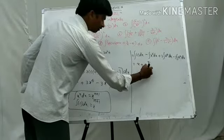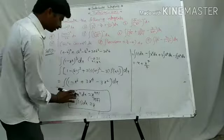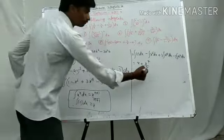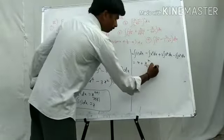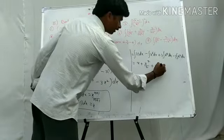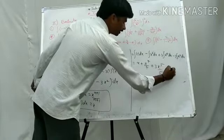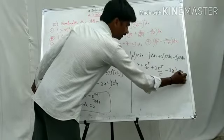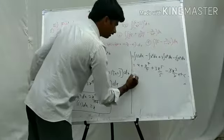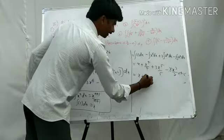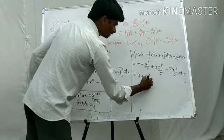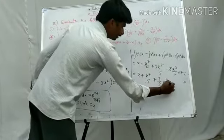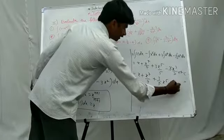That equals x minus x to the power 7 by 7, plus 3 times x to the power 5 by 5, minus 3 times x to the power 3 by 3, plus c. This is the first solution.